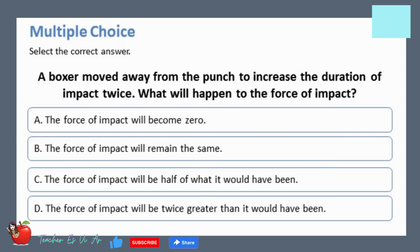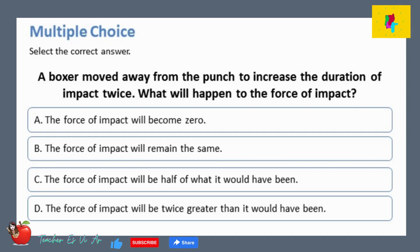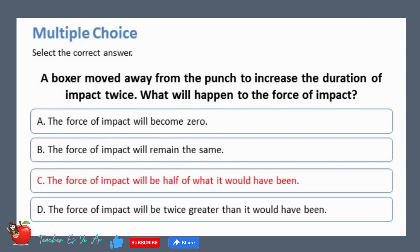Multiple choice — select the correct answer. A boxer moved away from the punch to increase the duration of impact twice. What will happen to the force of impact? A. The force of impact will become zero. B. The force of impact will remain the same. C. The force of impact will be half of what it would have been. D. The force of impact will be twice greater than it would have been. The correct answer is C: the force of impact will be half of what it would have been.